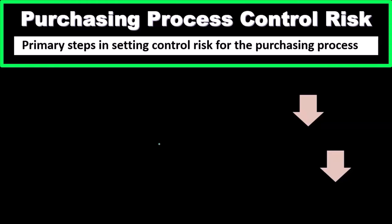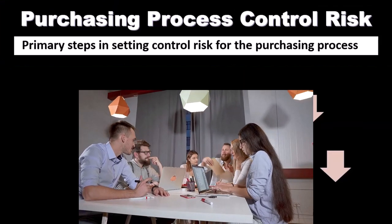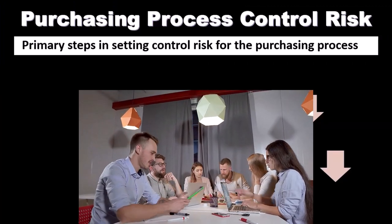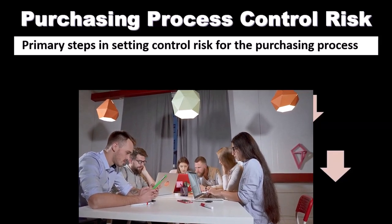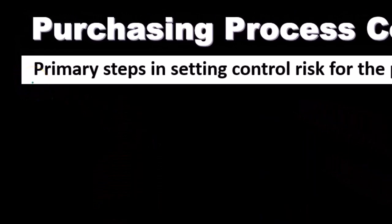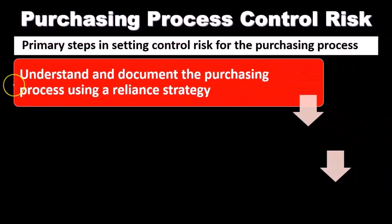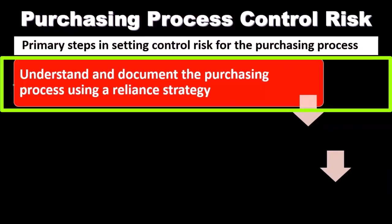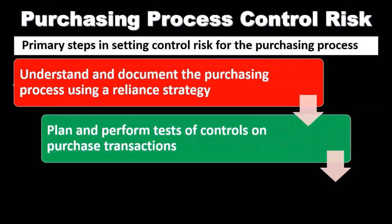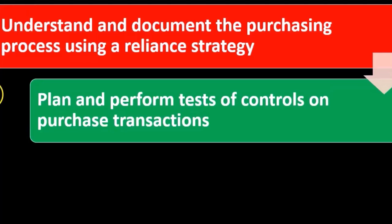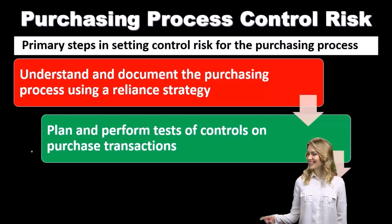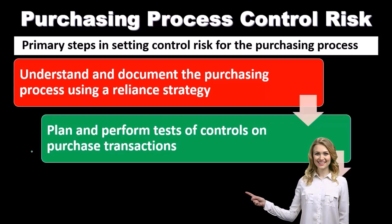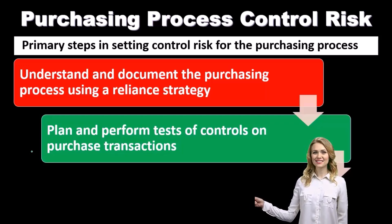Now we consider the purchase process internal controls. These are set up by management, but we will rely on them in the audit to some degree — the degree of reliance will determine how much substantive testing we do. Primary steps in setting control risk for the purchasing process include: understand and document the purchasing process using a reliance strategy, then plan and perform tests of controls on purchasing transactions. We test the controls and the checks and balances, which should take less work than doing full substantive testing.